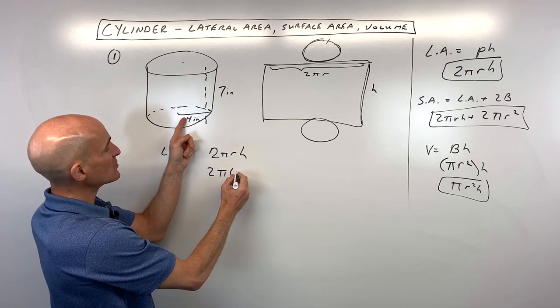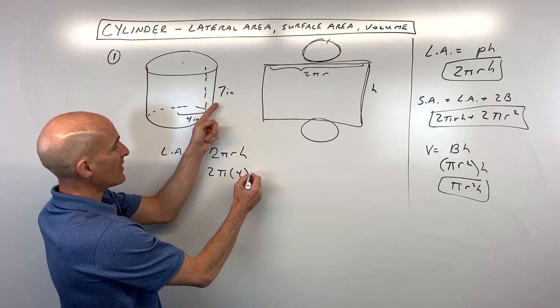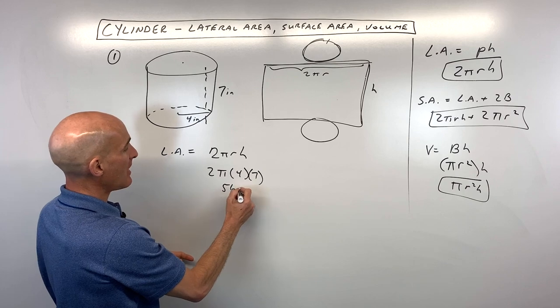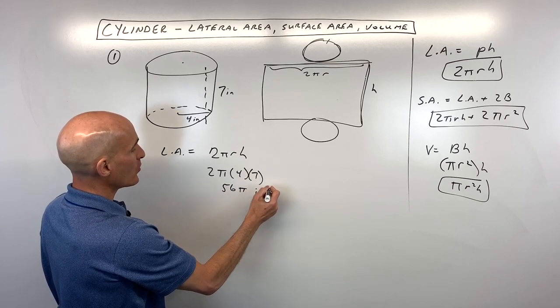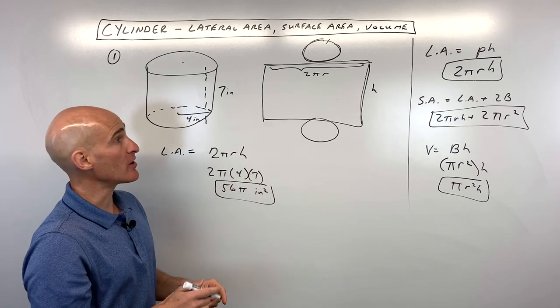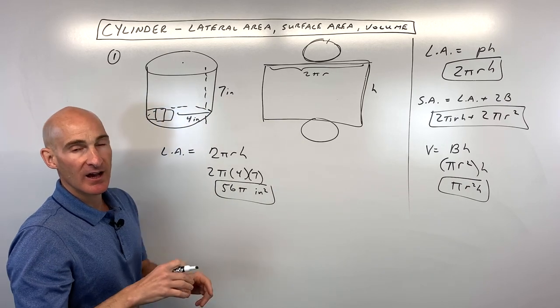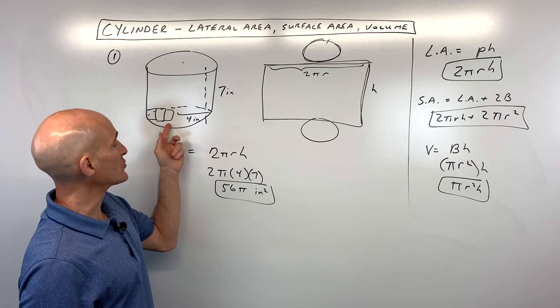So we have 2π times the radius, which is 4, times the height, which is 7, and that comes out to 56π inches squared. So inches squared, since it's area, it's like you're covering the surface here with little 1 by 1 square inches, little squares.